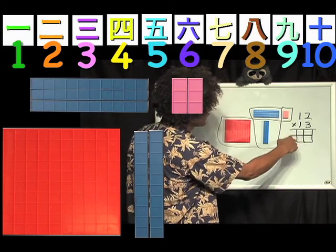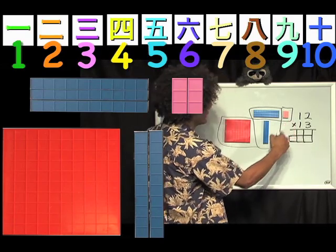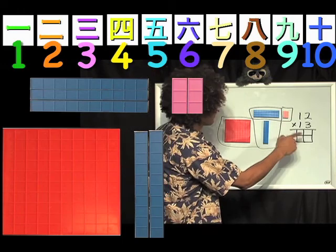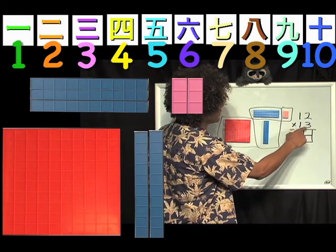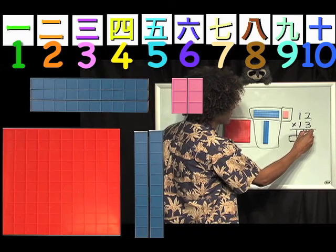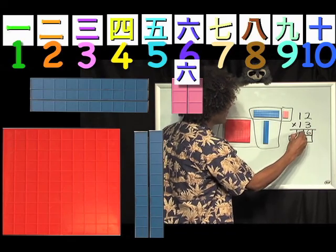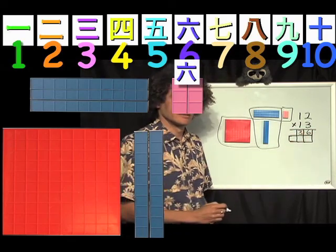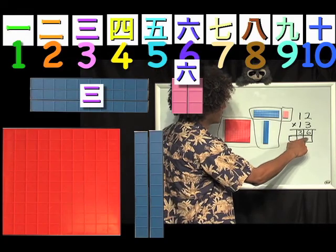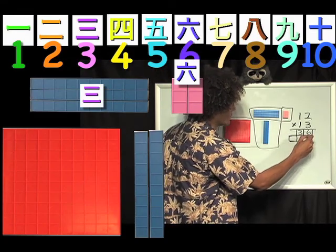You can see now we have the boxes here, they're not quite as perfect, but all I have to do now is count. How many here? Six. How many here? Three. There's nothing in that box.